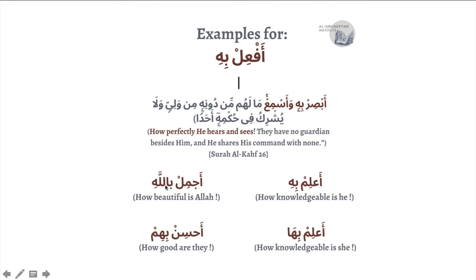More examples: أَجْمِلْ بِاللَّهِ means 'how beautiful is Allah,' أَعْلَمْ بِهِ means 'how knowledgeable is he,' أَحْسِنْ بِهِمْ means 'how good are they,' and أَعْلَمْ بِهَا means 'how knowledgeable is she.' That's how you use this first pattern to show amazement.